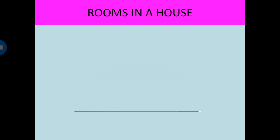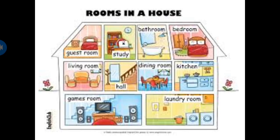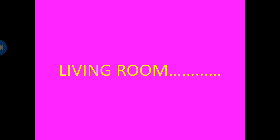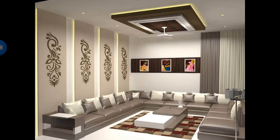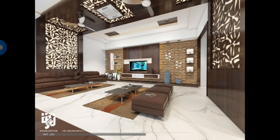Now we see the rooms in a house. In each and every house, there are different rooms, and each room is used for different purposes. Living room — the living room is the largest room of the house. We can see a sofa and television in the living room. Guests are also received in the living room. It is a very important room of our house.